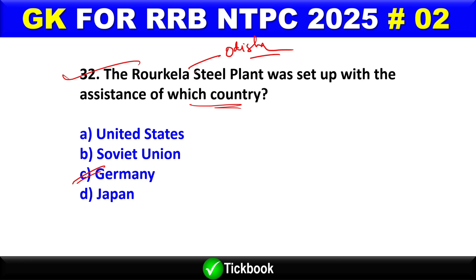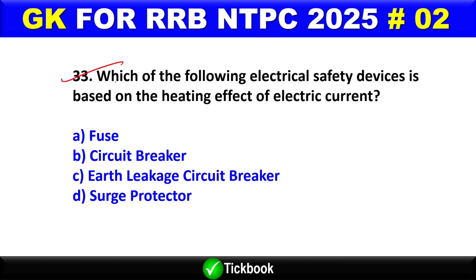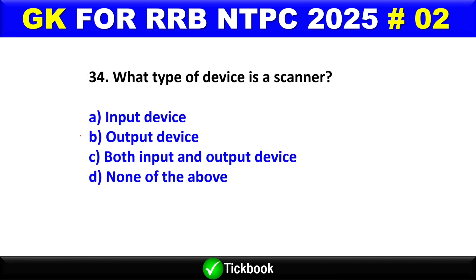Question number 33: Which of the following electrical safety devices is based on the heating effect of electric current? Option A is the right answer — a fuse.